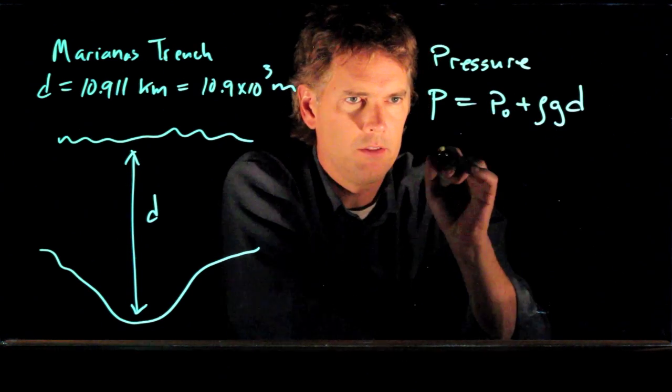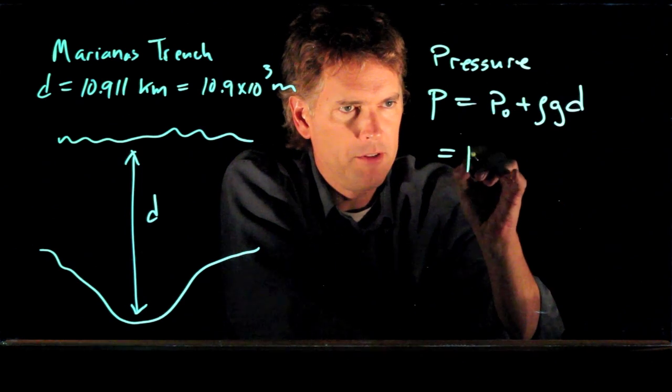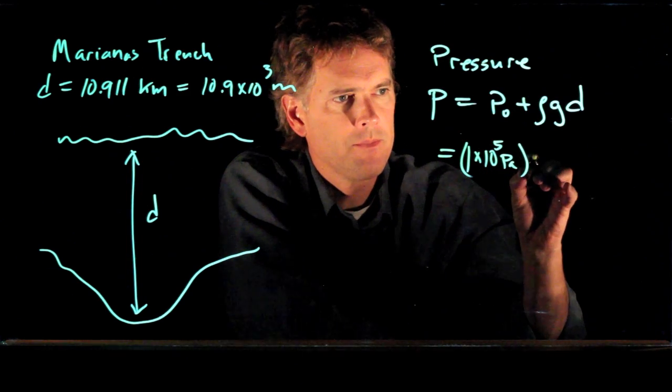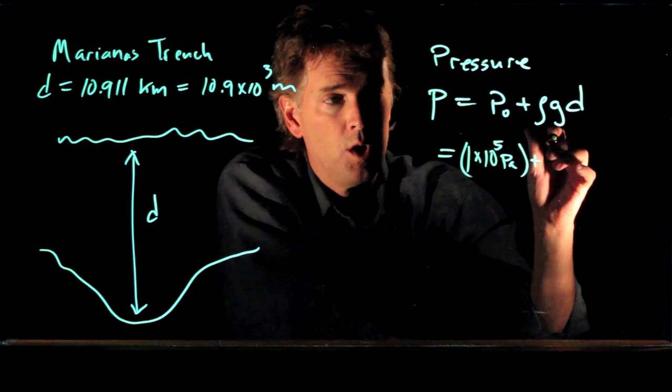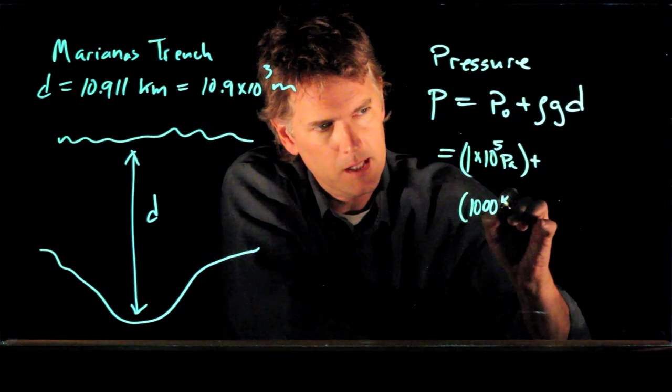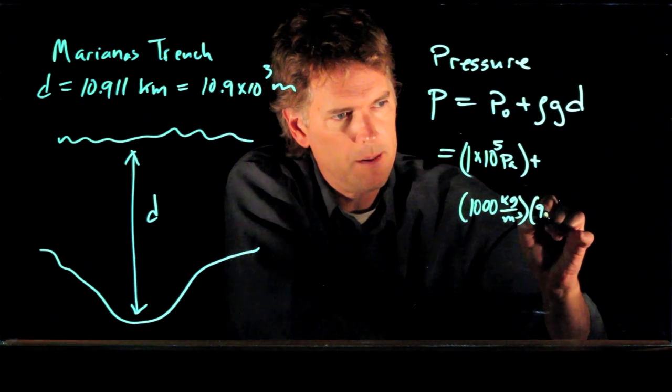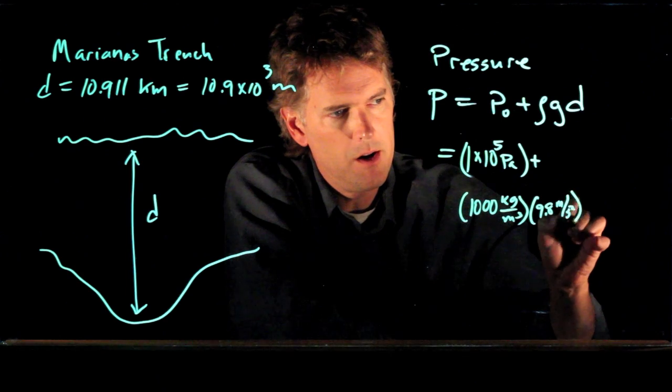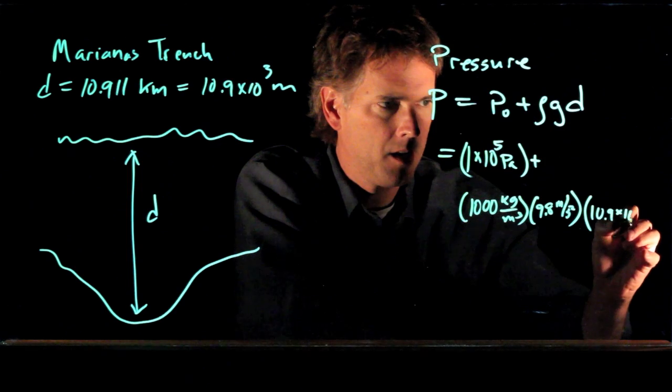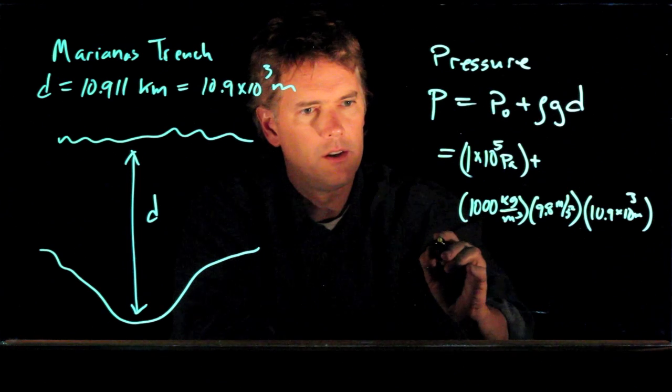All right, so we should be able to calculate this. Pressure at the atmosphere is one atmosphere, 1 times 10 to the 5 pascals. And now we have to add rho g d. Rho was 1,000 kilograms per cubic meter, g is 9.8 meters per second squared, and d is 10.9 times 10 to the 3 meters. Now you can run all these numbers in your calculator.